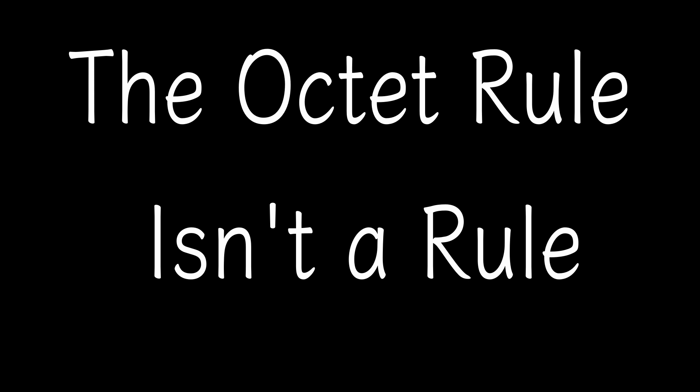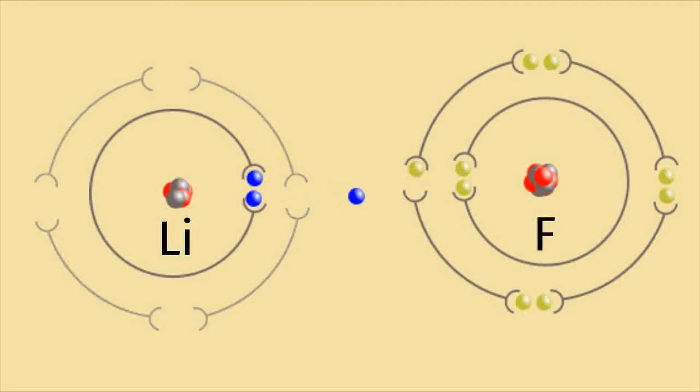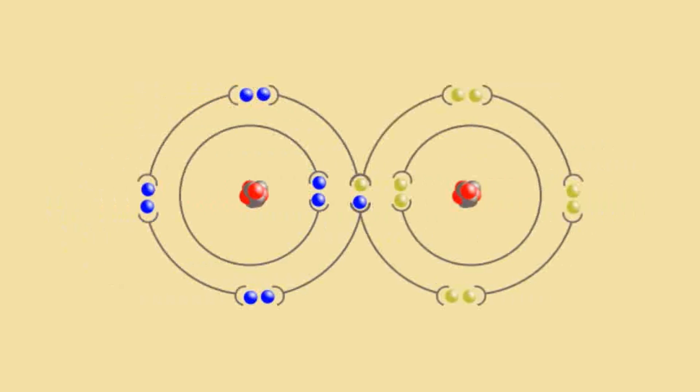The octet rule isn't a rule. There, I've said it. If you've studied chemistry at school, you will have heard about the octet rule. Roughly speaking, it says that atoms are most stable with a full outside shell of electrons — in other words, a full valence shell of electrons. And what this means is that atoms will gain, lose, or share electrons to obtain this full outside shell.